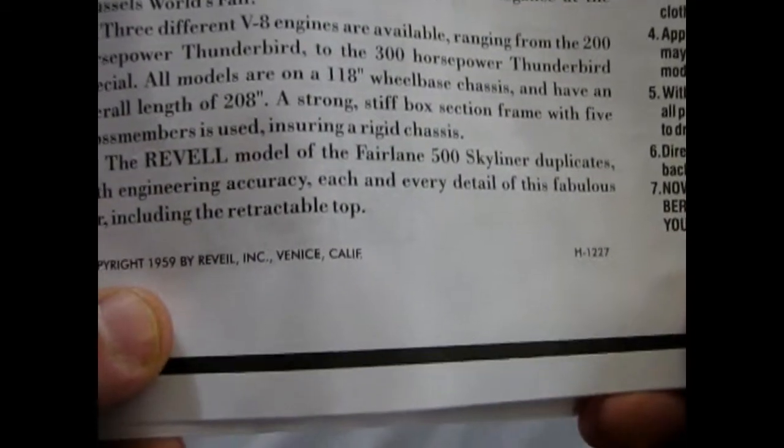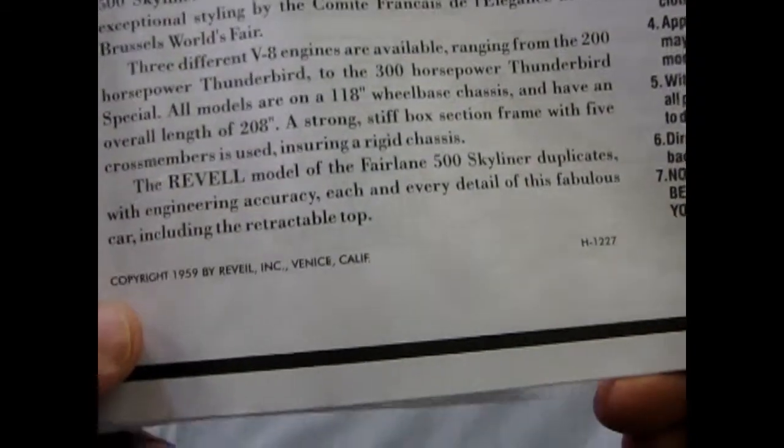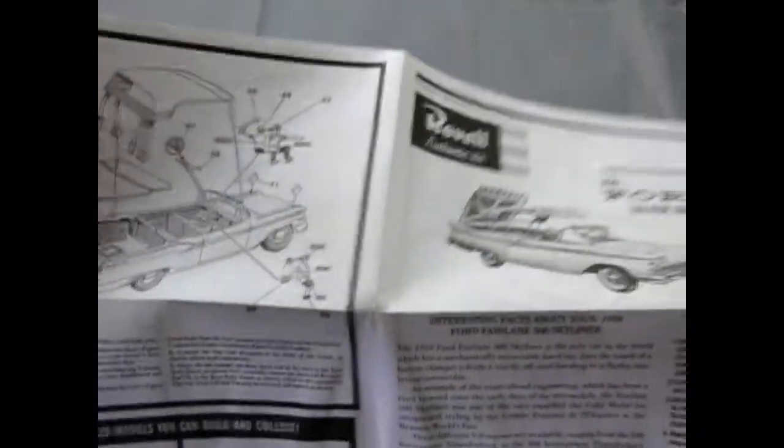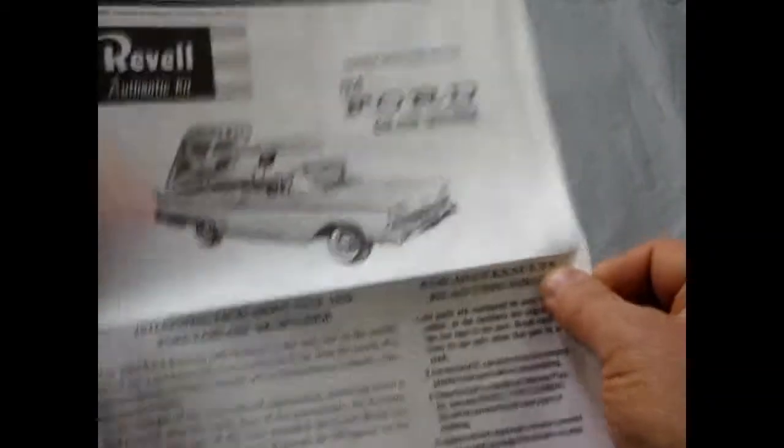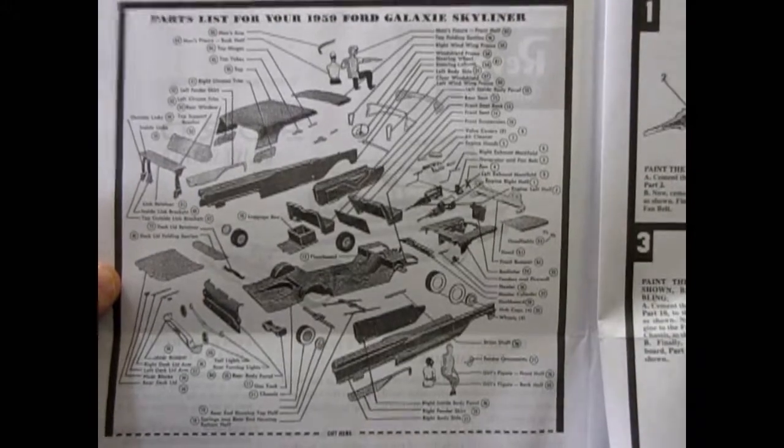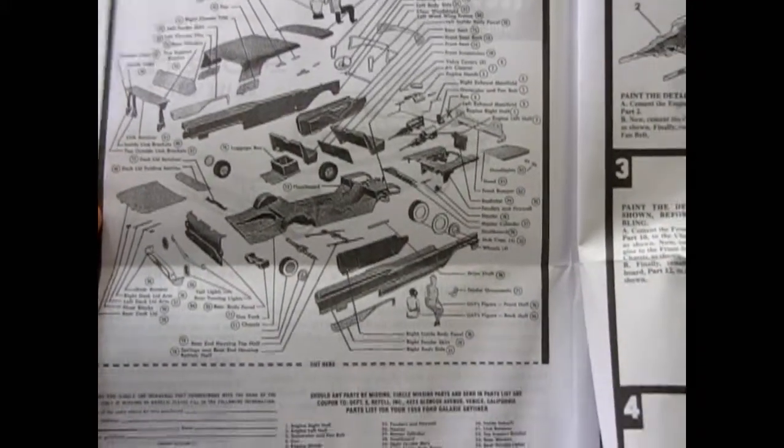Three different V8 engines are available ranging from the 200 horsepower Thunderbird to the 300 horsepower Thunderbird Special. The Revell model of the Fairlane 500 Skyliner duplicates, with engineering accuracy, each and every detail of this fabulous car, including the retractable top. Copyright 1959 by Revell Inc. Venice, California. So yes, this is one of the original Revell kits, reproduced just for you.